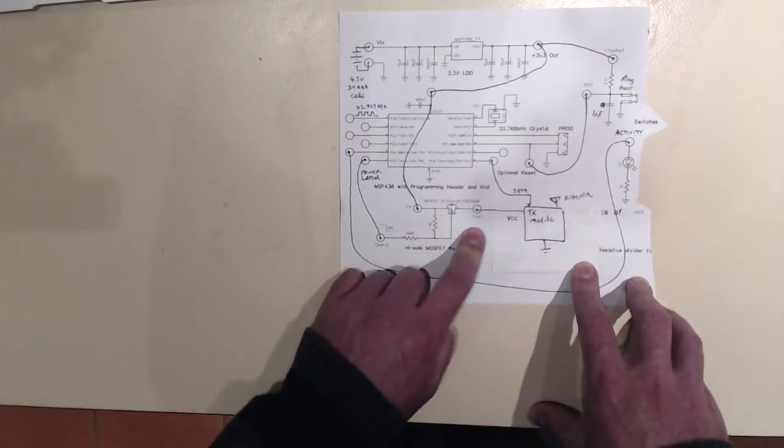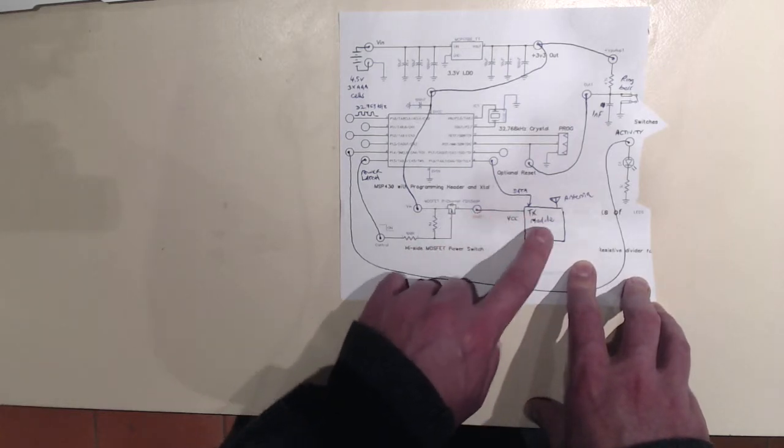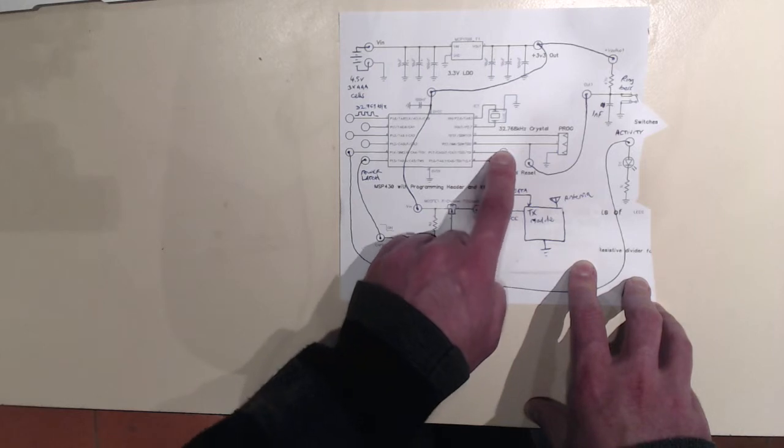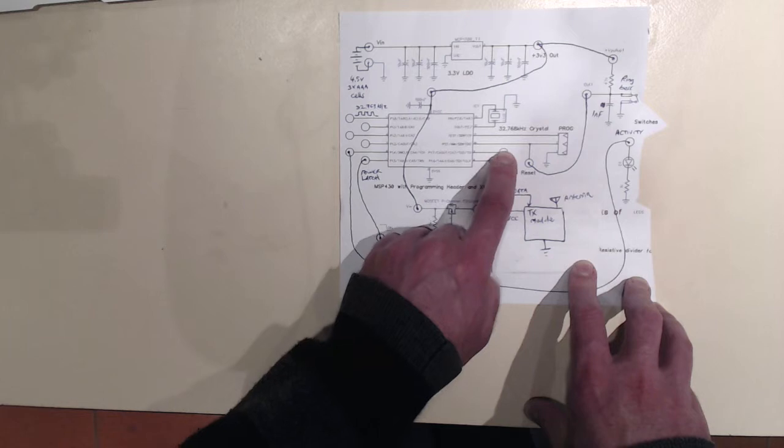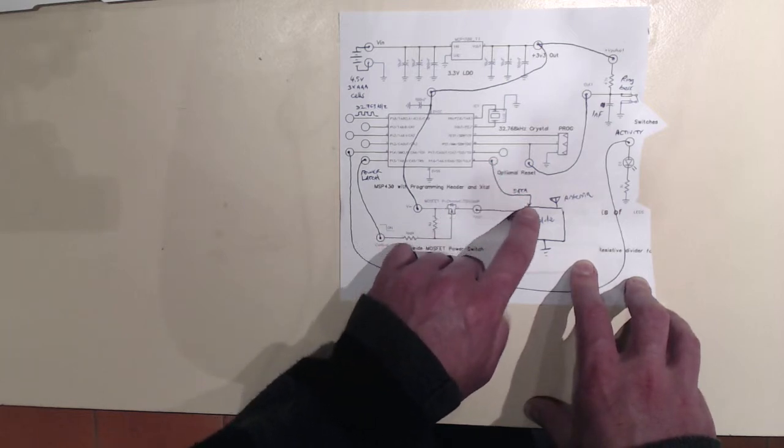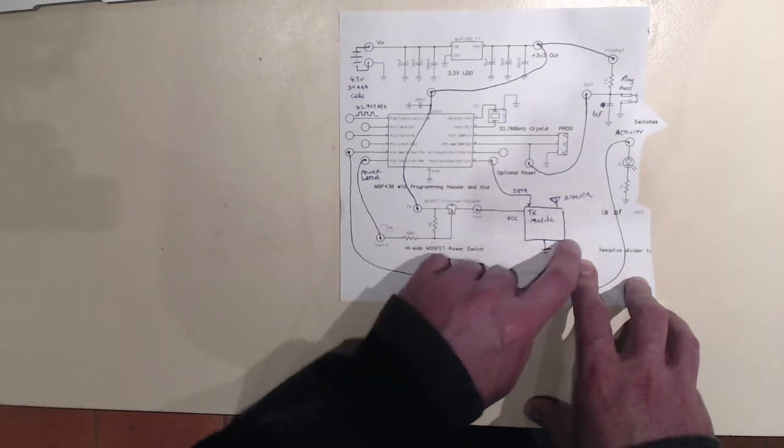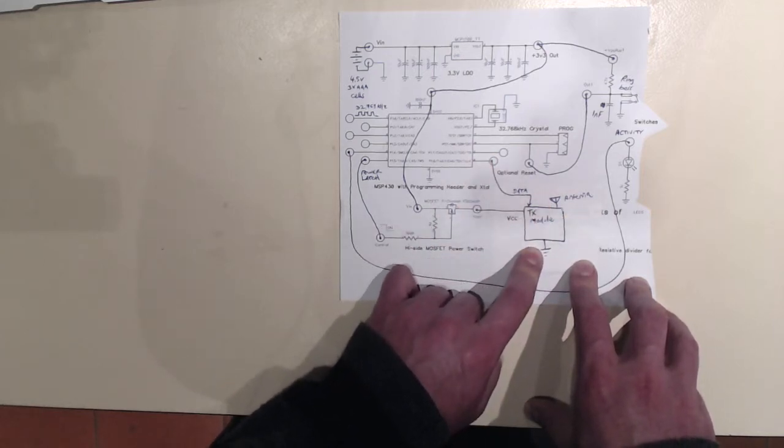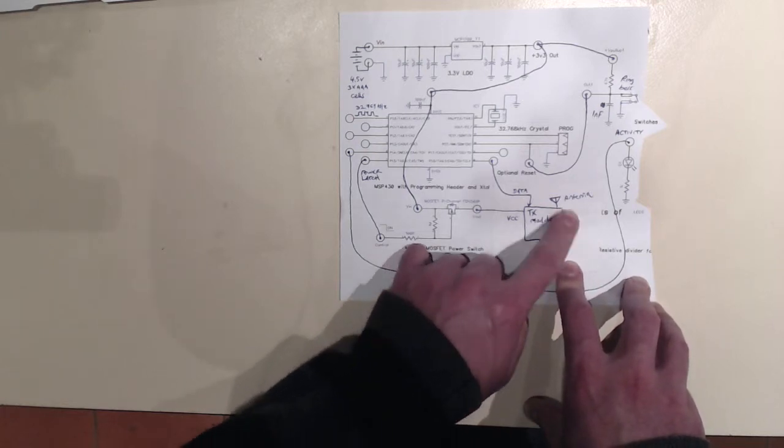This may not be entirely necessary, so one other option is to actually just power the transmitter module from one of these output ports directly. Just bring that output port high before sending this data out and then take it low again or put it in a high impedance state so that this effectively shuts down when it's not required to save current, save a little bit of energy consumption.